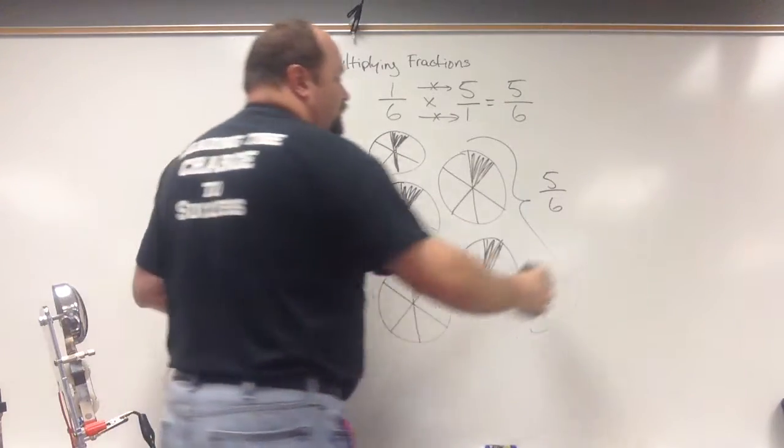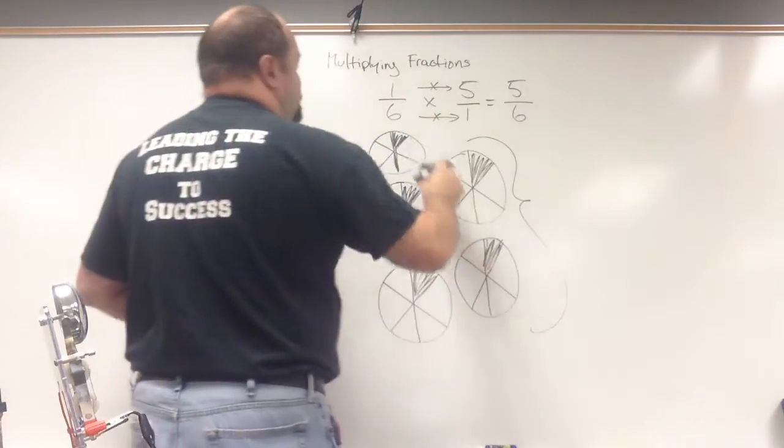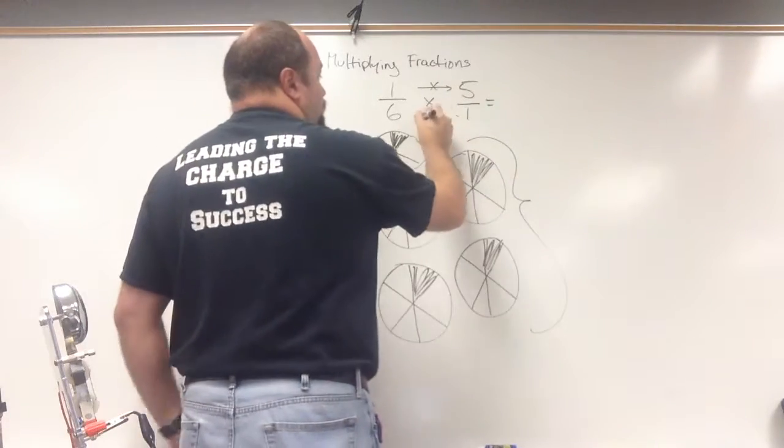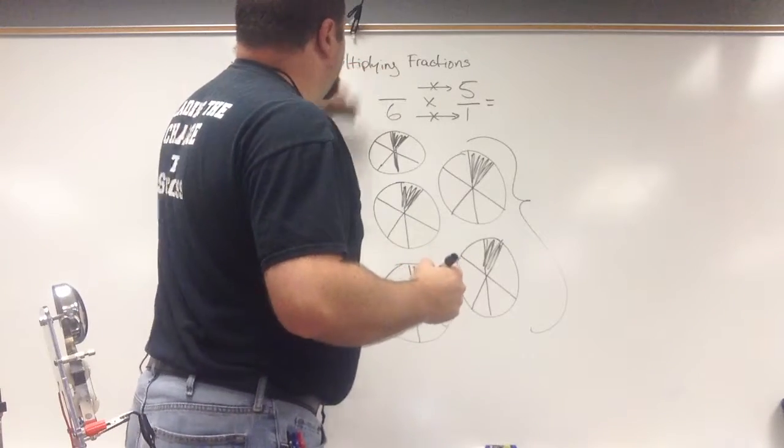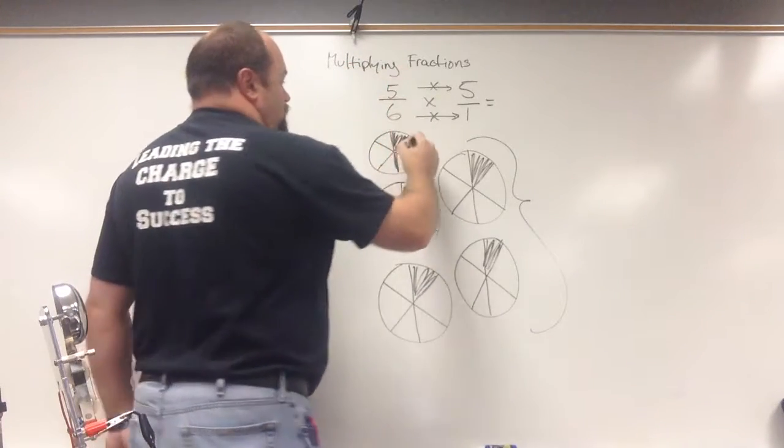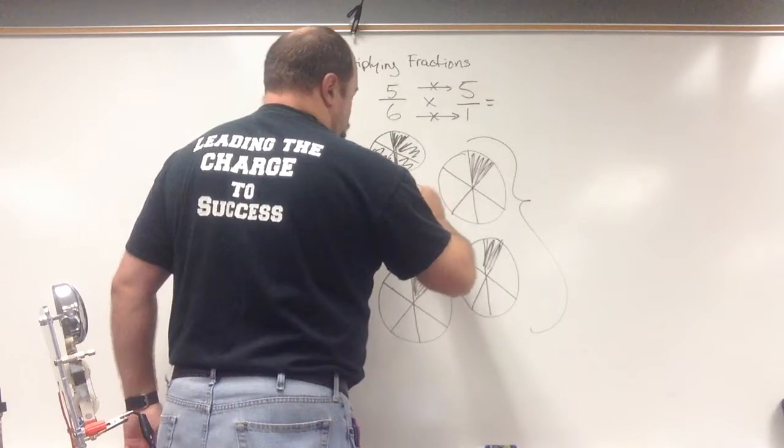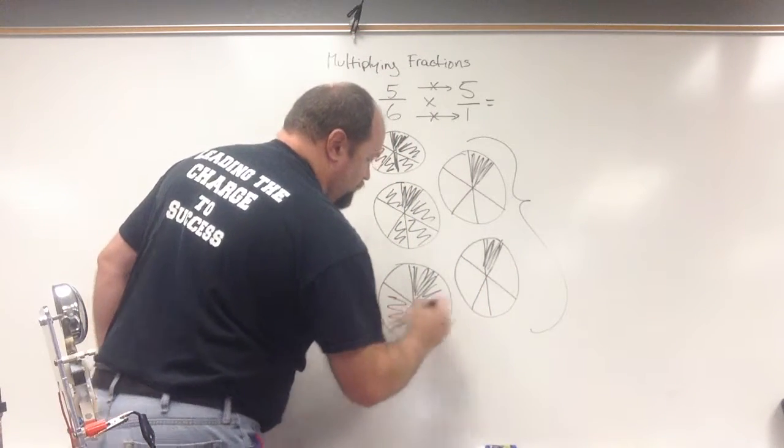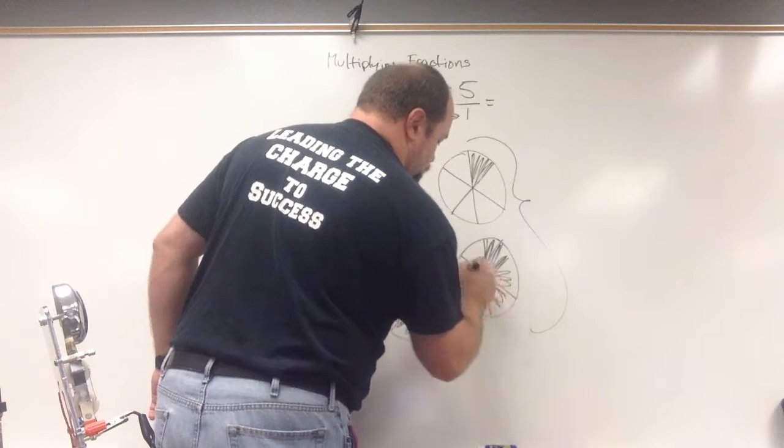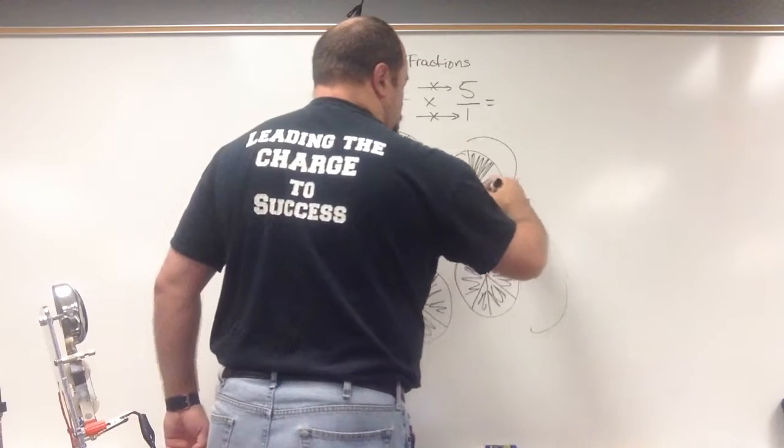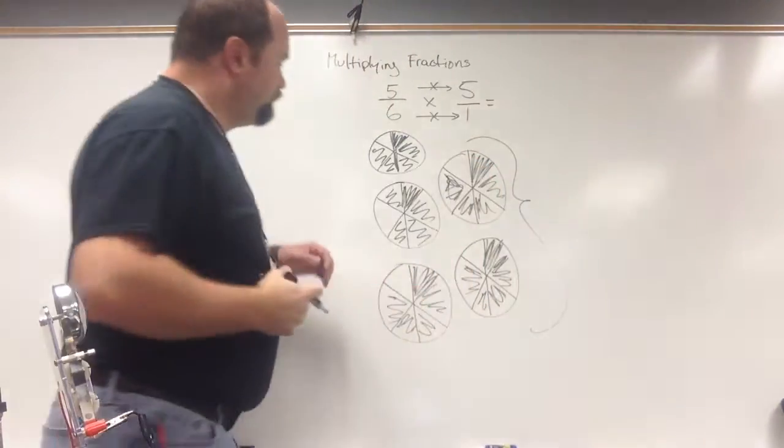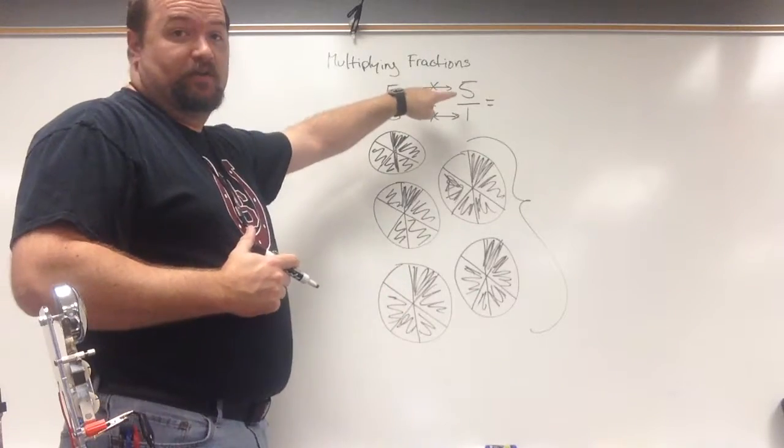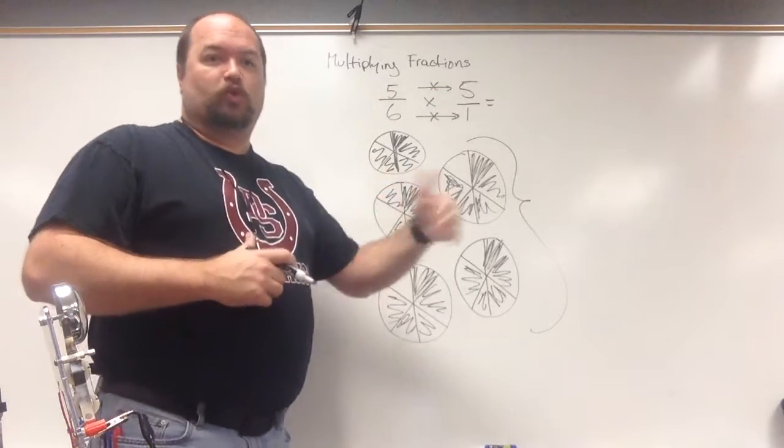So instead of 1 sixth this time, I'm going to do 5 sixths just to make it a little bit more unfriendly with the numbers. So I want you all to see at least a semi-hard one. Okay, so I've got, here's my 5 sixths, and I've got it 1, 2, 3, 4, 5 times, because I'm multiplying it by 5.